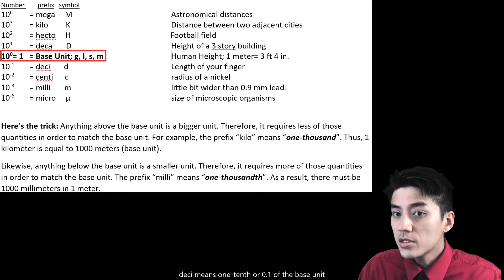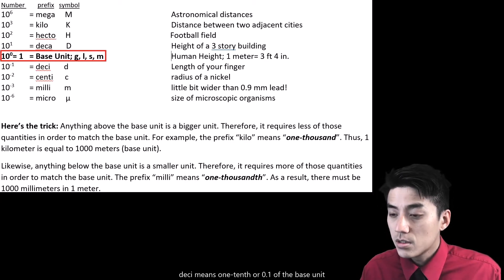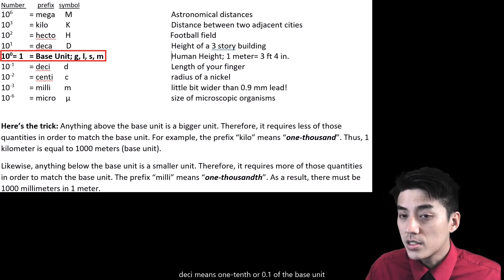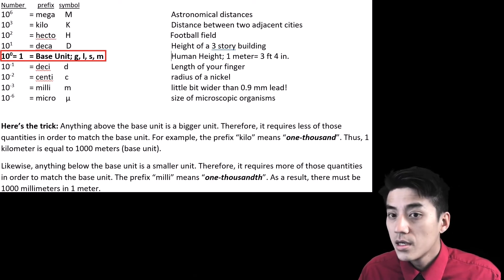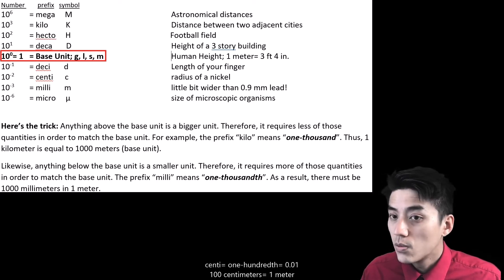As you go below the base unit, you'll see desi is the first one to come up. Desi means 10 to the minus 1st, or a 10th. So desi is 10 times smaller than the base unit. The symbol is little d. 10 to the minus 2 is centi. Centi means 100th. There are 100 centimeters in one meter.